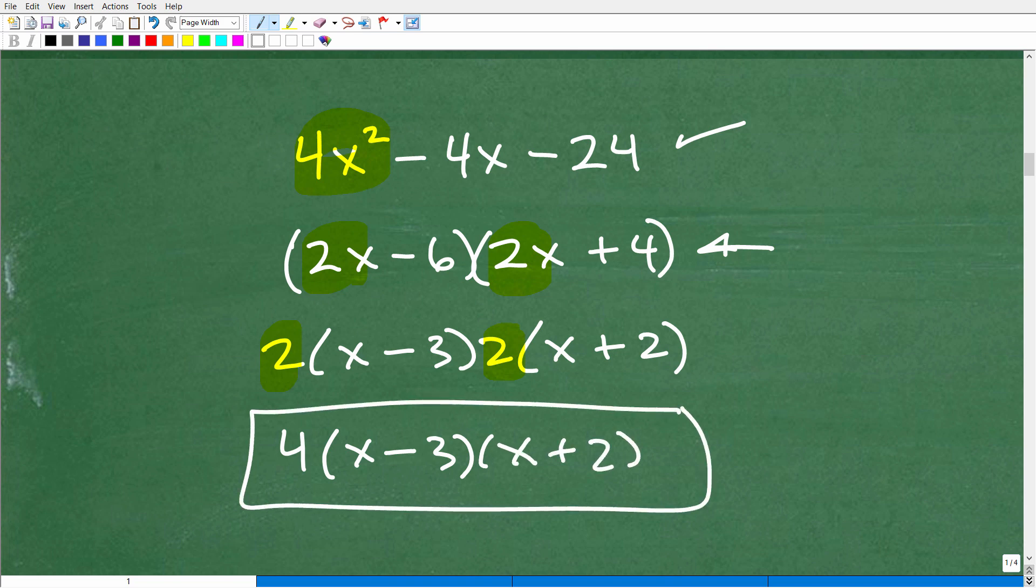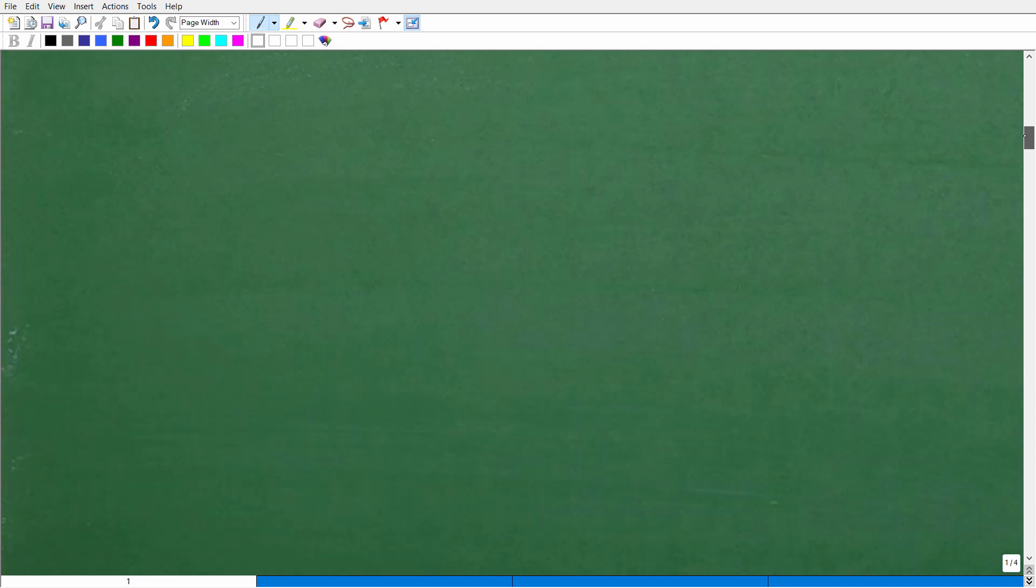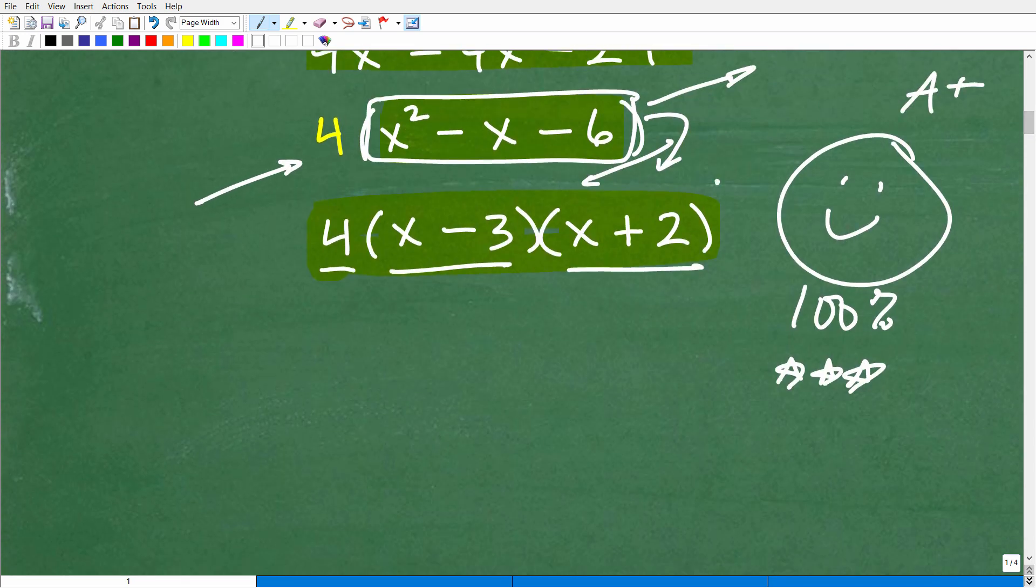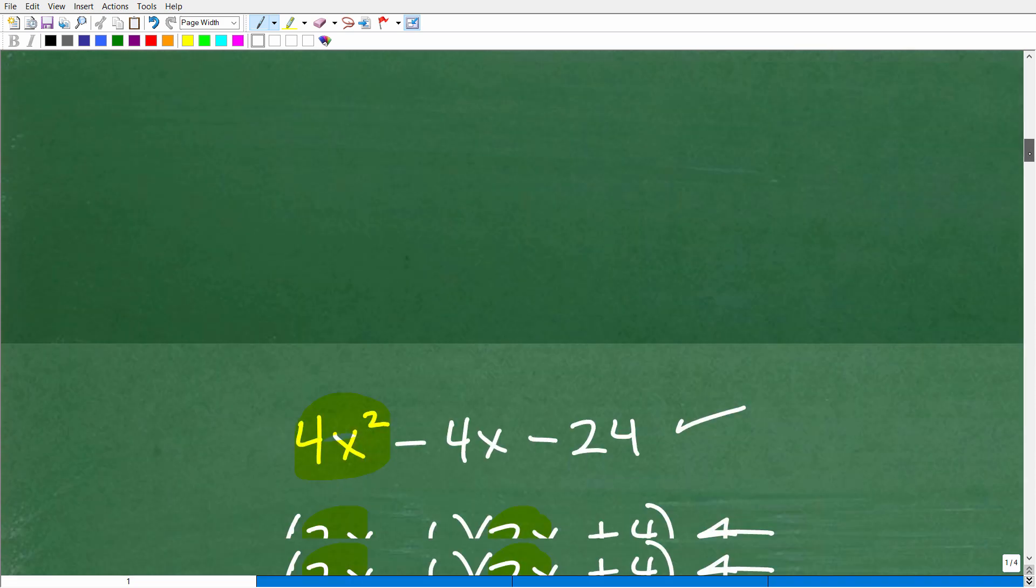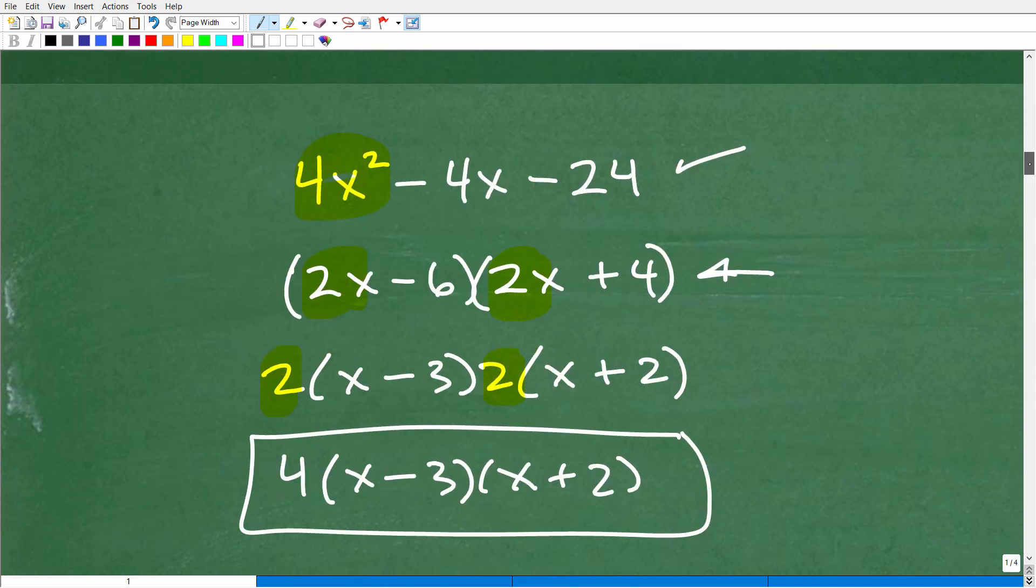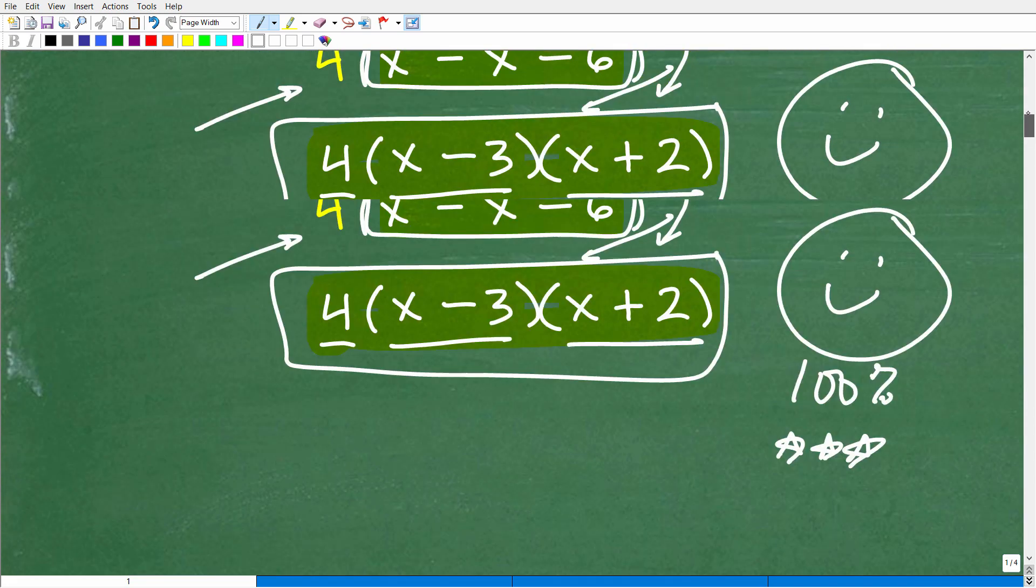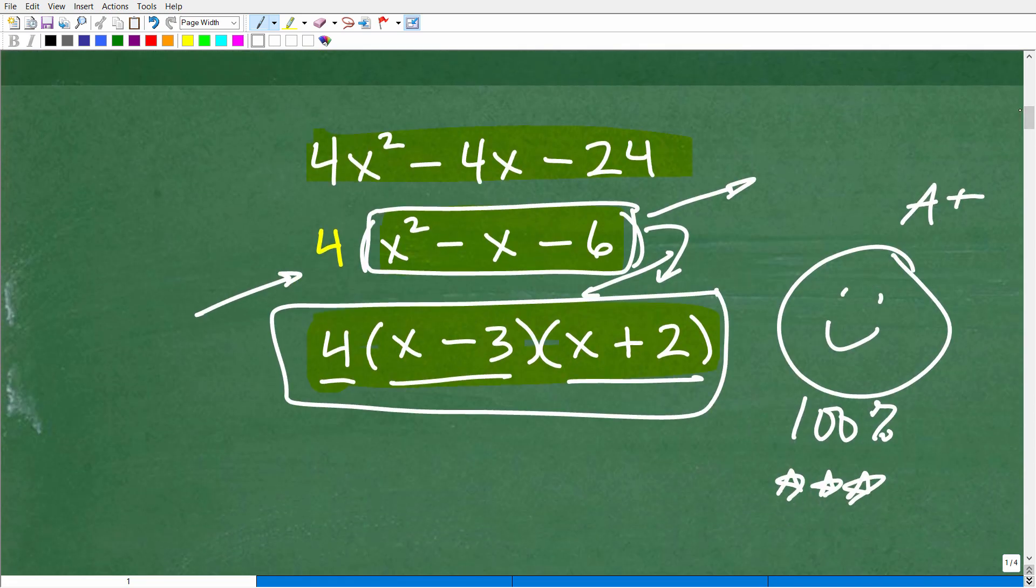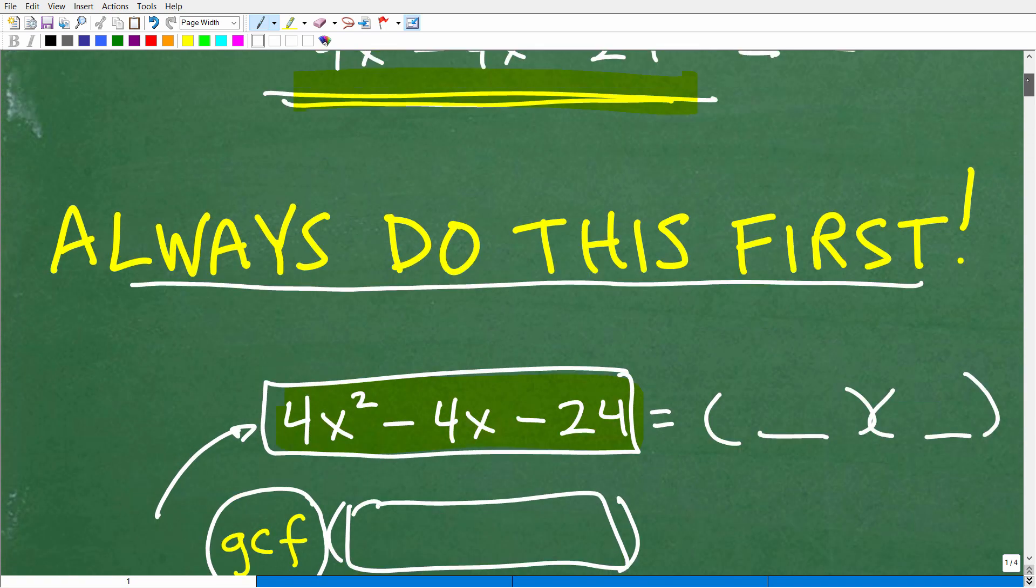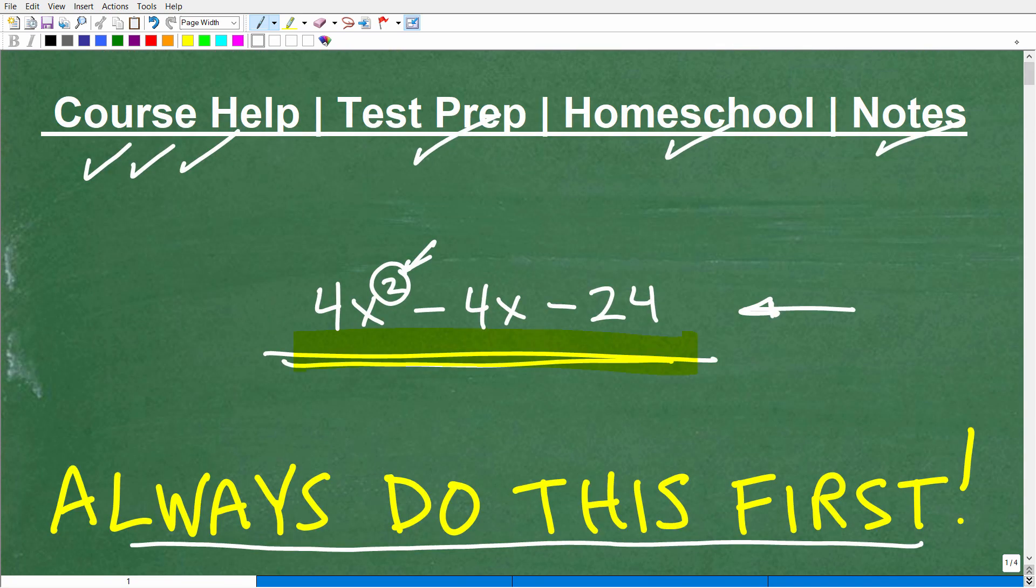That's our final answer. And of course, that's what we have right here. So again, instead of going this route, this is much more difficult to do. You always want to take out that greatest common factor first and then go from there. So that was the whole point to this little video, Factor Out the GCF.